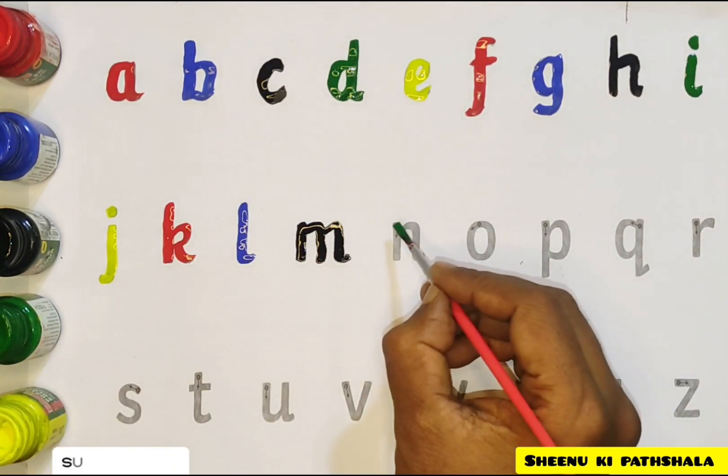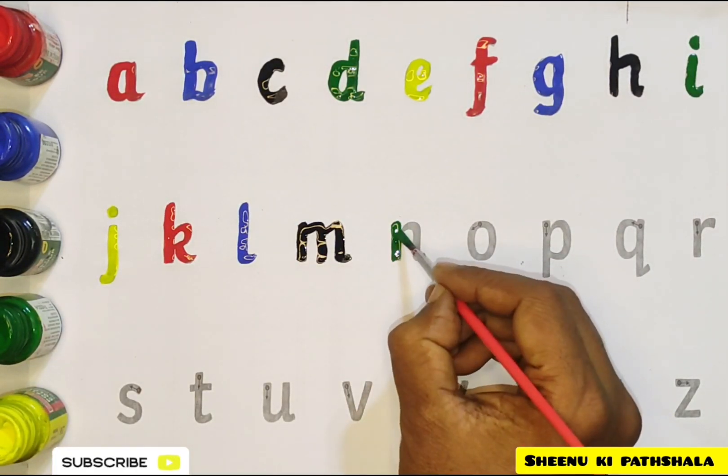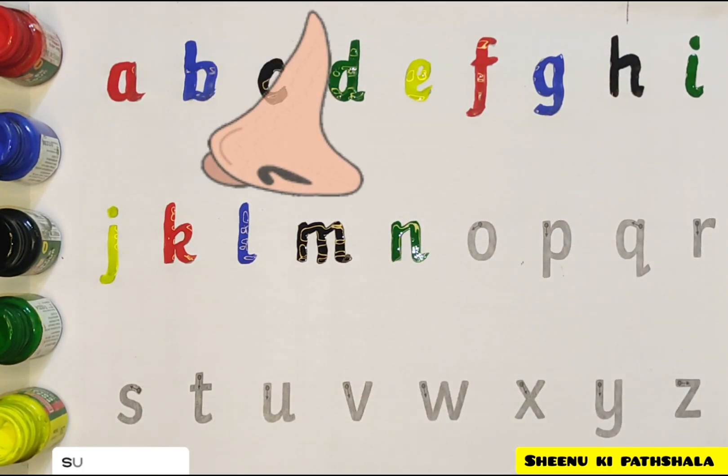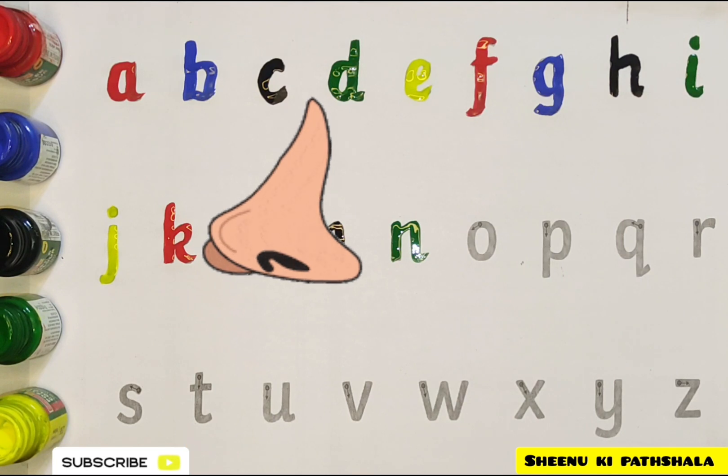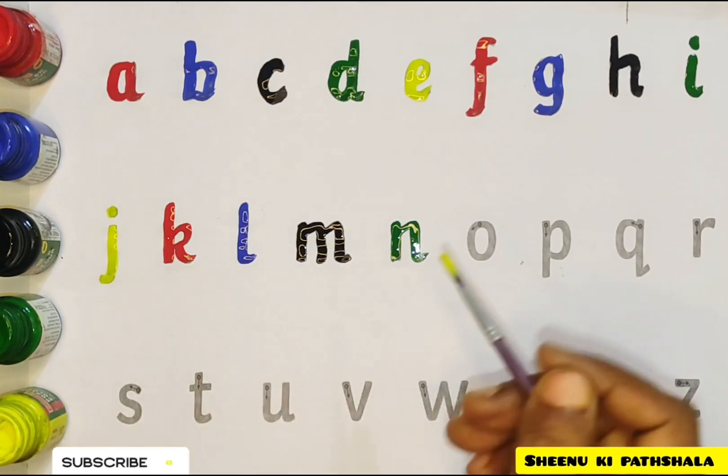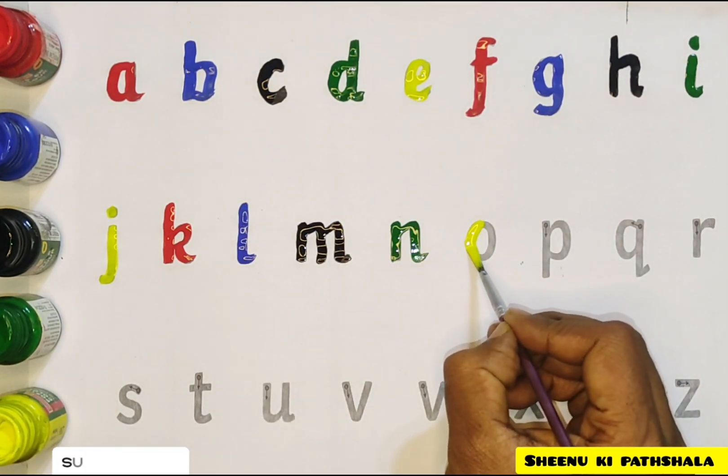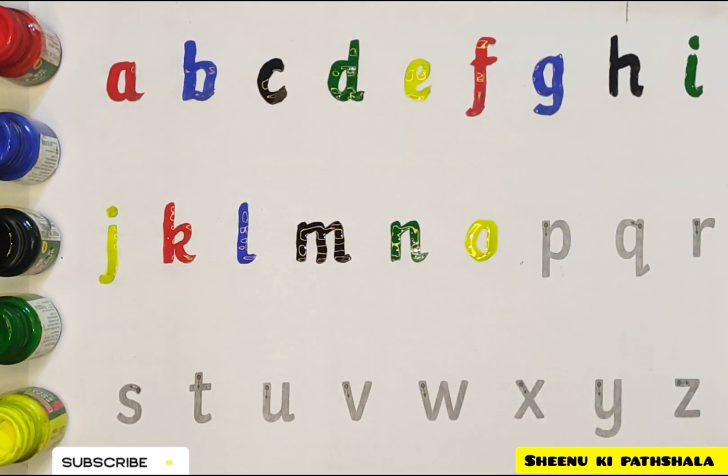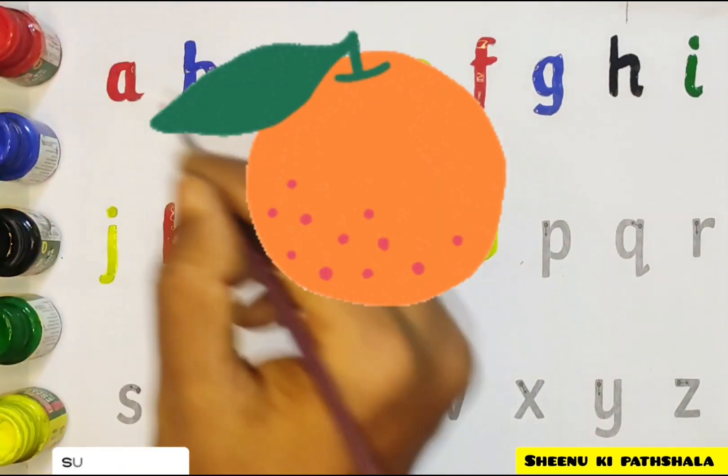Green color. N for nose. Yellow color. O for orange, red color.